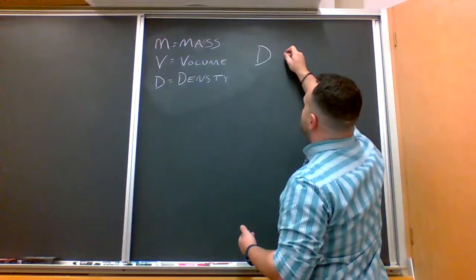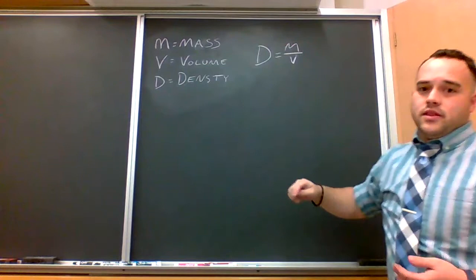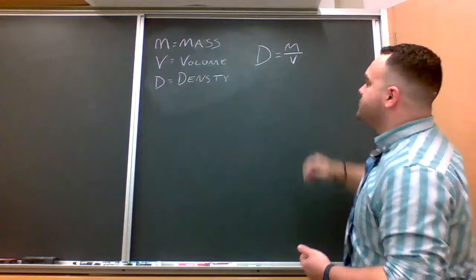So the formula that we use to figure out density is density, or D, equals mass over V, volume. D equals M over V. Density is mass divided by volume.